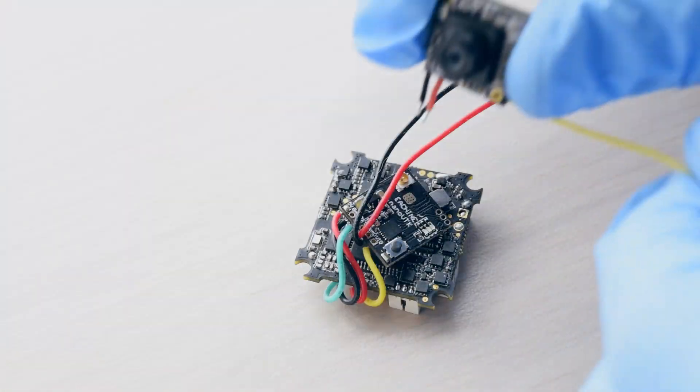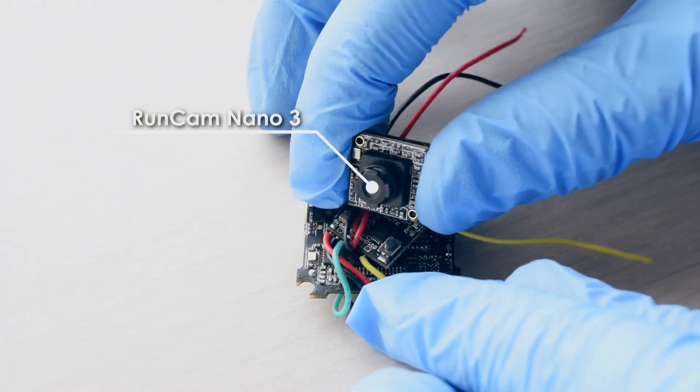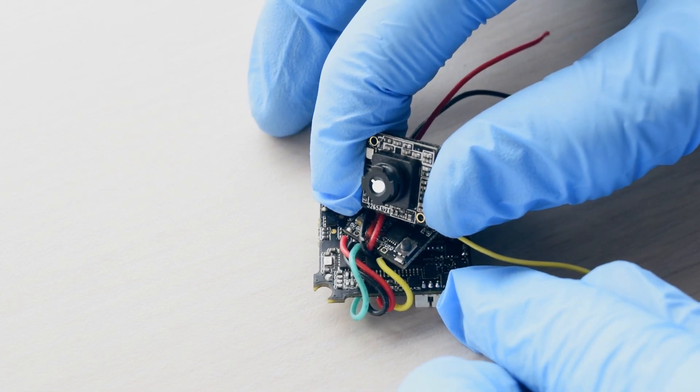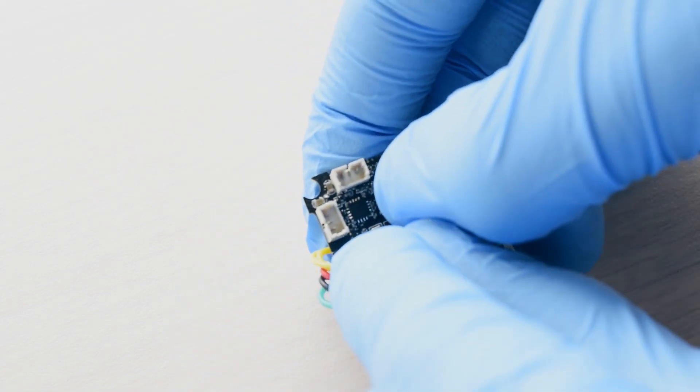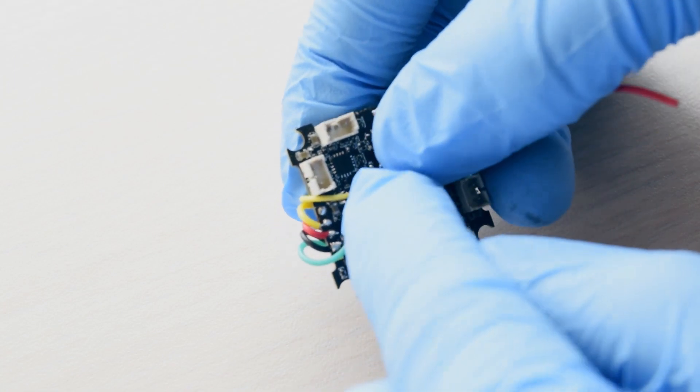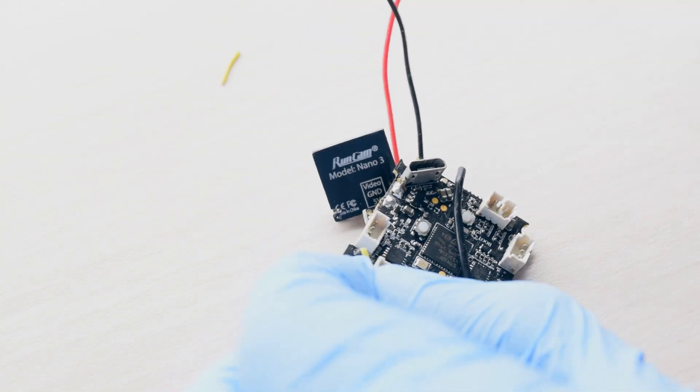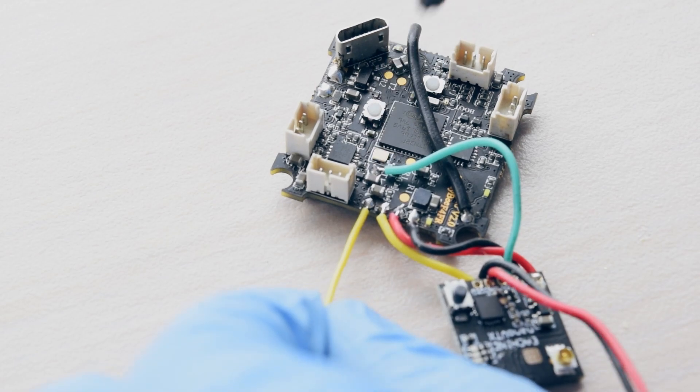I'm also going to upgrade the camera with the RunCam Nano 3, left over from an older build. After measuring the video wire to the length, it can be cut, tinned, and soldered next to the video out wire.